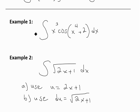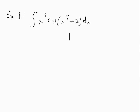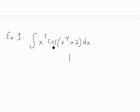I'm going to go over two examples. Example one states: find the integral of x cubed times cosine of x to the 4 plus 2, dx. The idea of the substitution rule is to simplify this complex function to something simpler by substituting a complex part with a new variable.